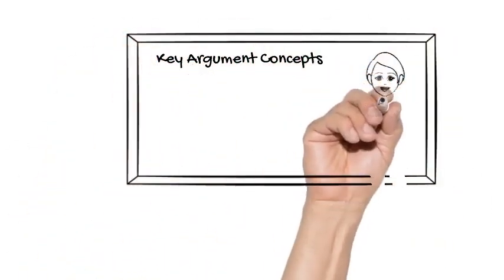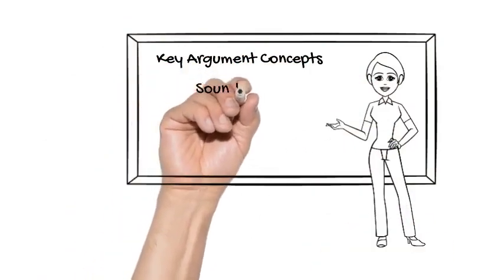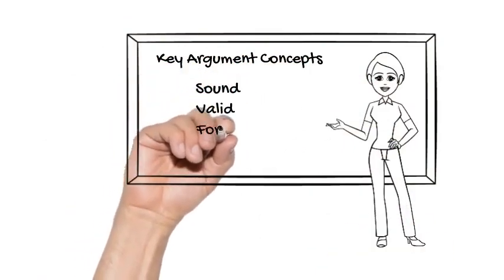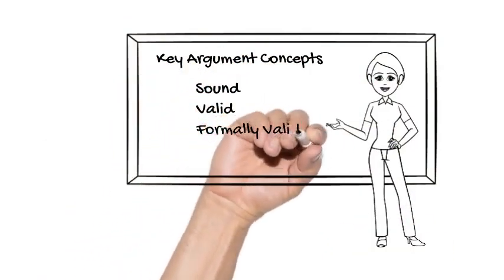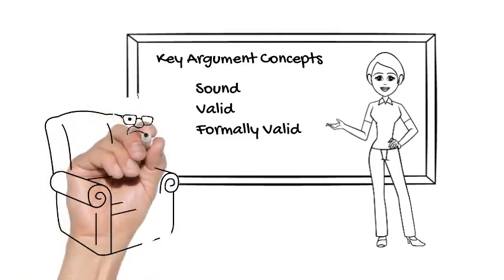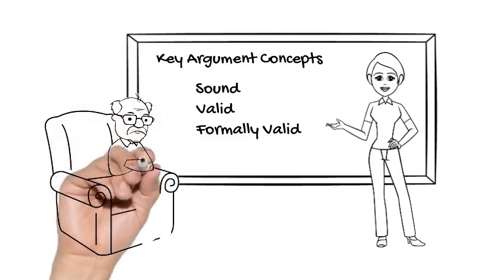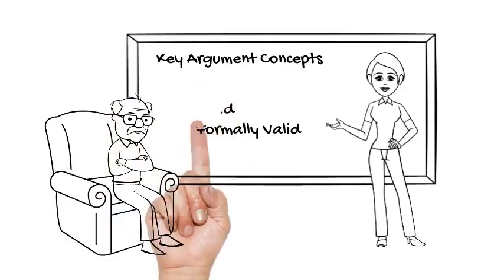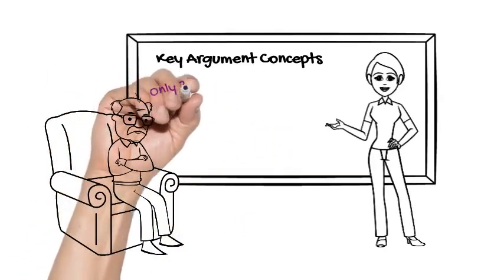You may recognize formal validity as one of the three main compliments that we can pay to arguments from the beginning of this video. We will focus more on exactly what formal validity is, how it should be defined, and how to assess whether arguments are formally valid in a later video. For now, what's important to understand about formal validity is that it gives us an answer to my Uncle Larry. If an argument is formally valid, then Uncle Larry has no way to resist the conclusion, so long as he accepts the premises.